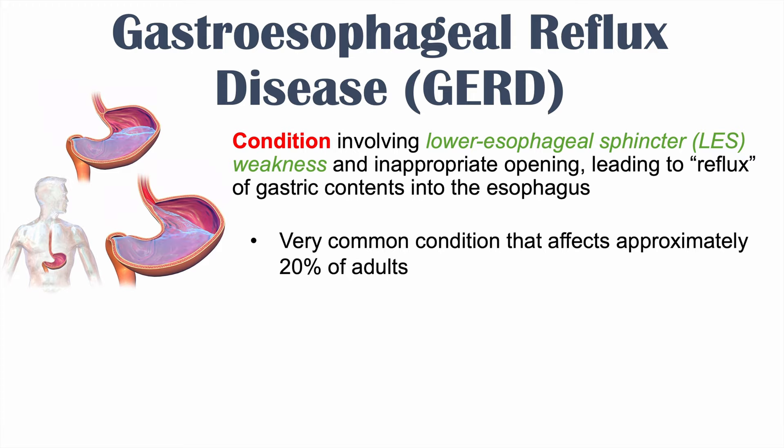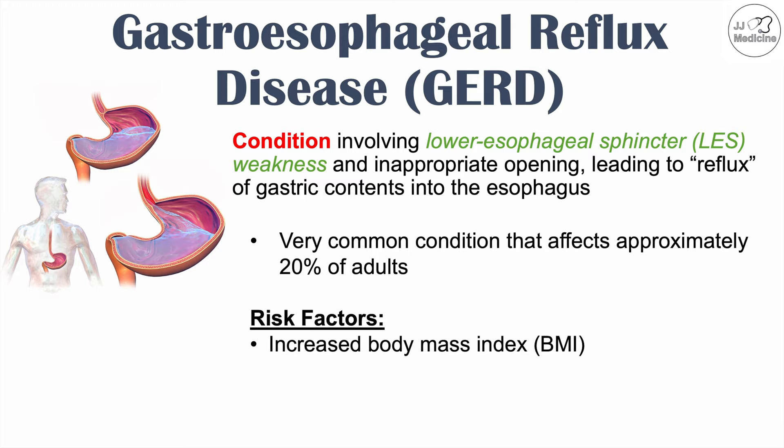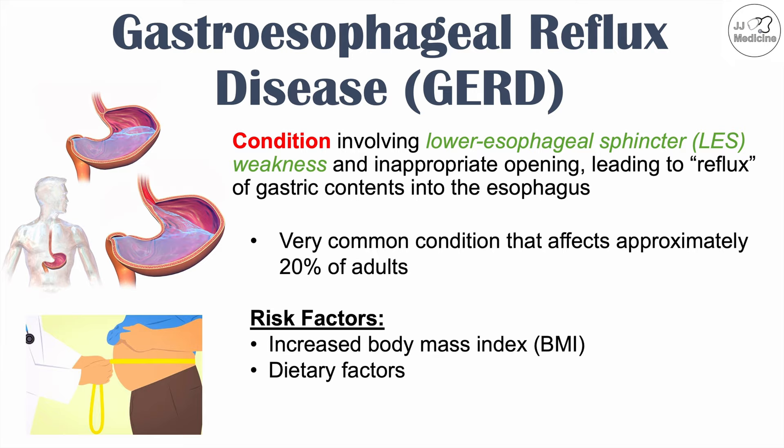GERD is a very common condition — it affects approximately 20% of adults at some point in their life. Risk factors include increased body mass index or BMI, certain dietary factors such as foods and beverages that can cause inappropriate opening of the lower esophageal sphincter, and certain anatomical conditions such as hiatal hernia.